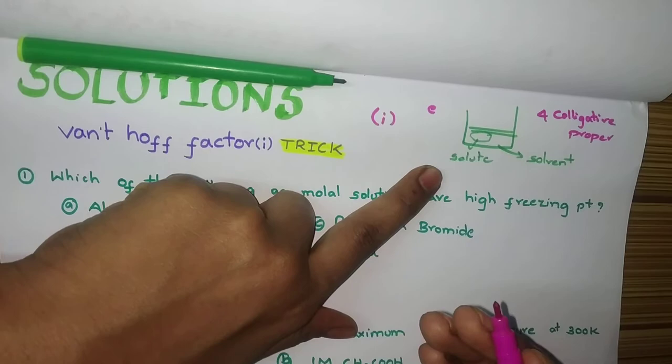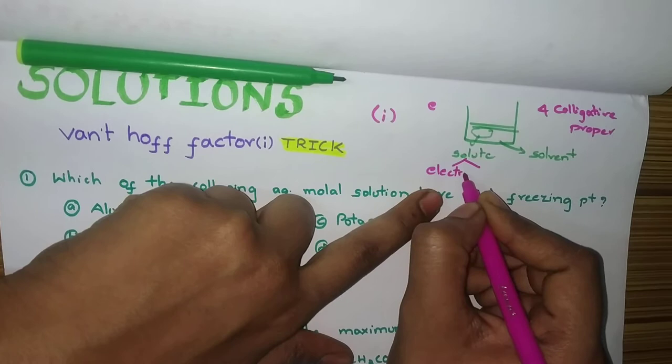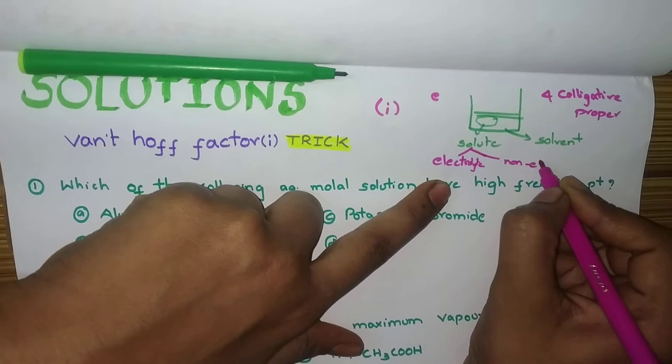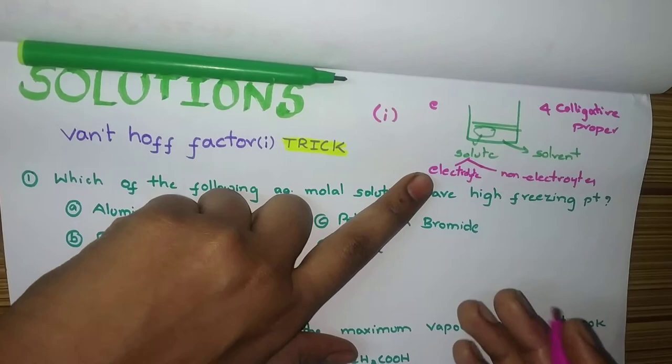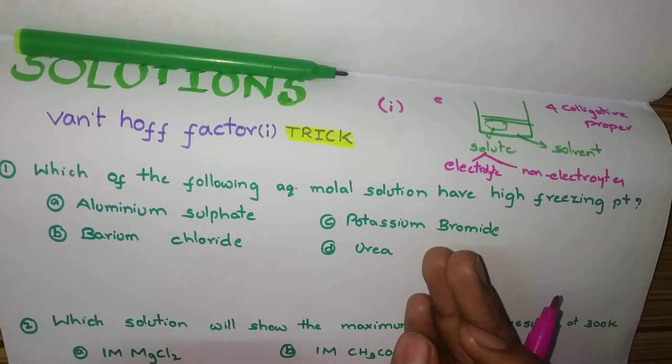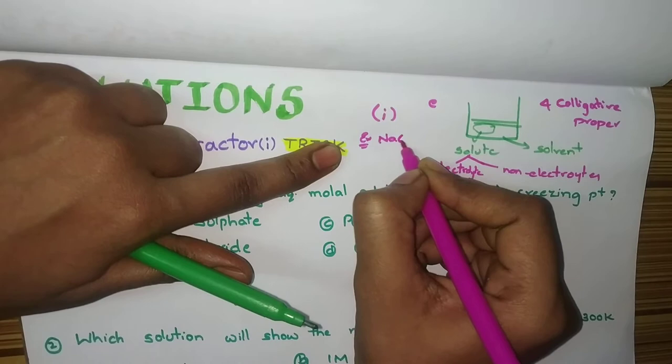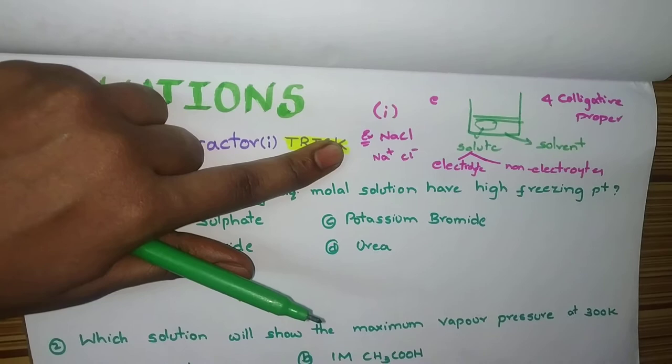Suppose, if this solute is, again, two types. That is, whether it is electrolyte or non-electrolyte. Electrolyte means that compound in solution will dissociate. Suppose, take example as NaCl. NaCl will dissociate to Na plus Cl minus. So, this comes in electrolyte.